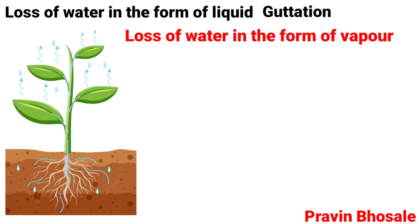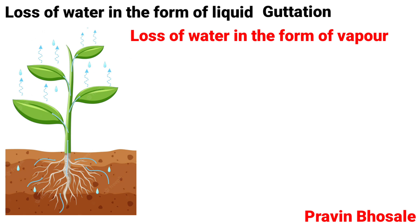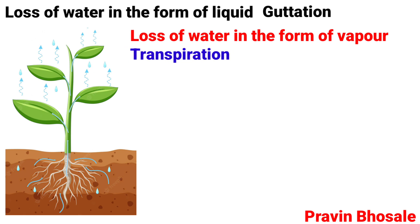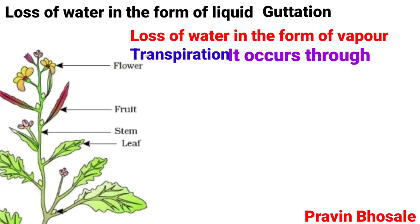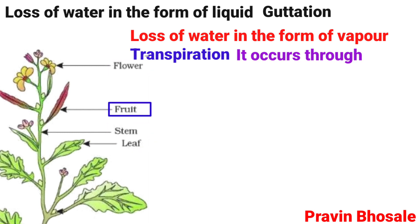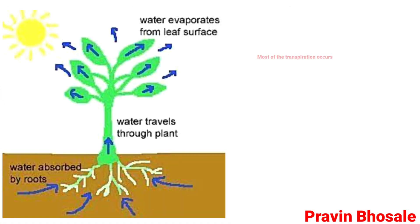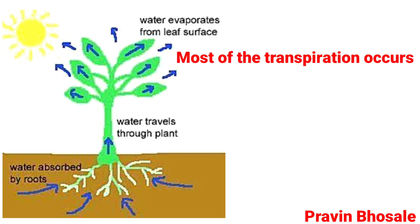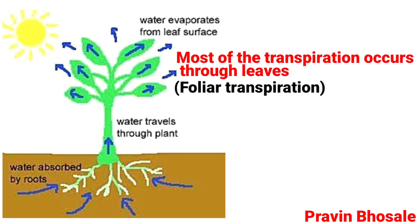Loss of water in the form of vapour is called transpiration. Transpiration occurs through leaves, stem, flower, and fruit. Most of the transpiration occurs through leaves, which is called foliar transpiration.